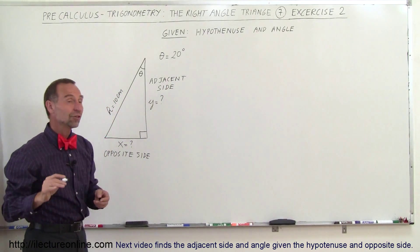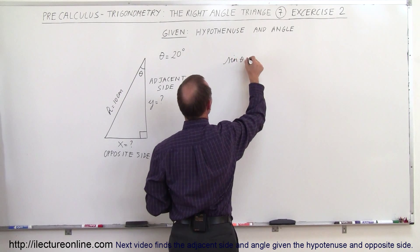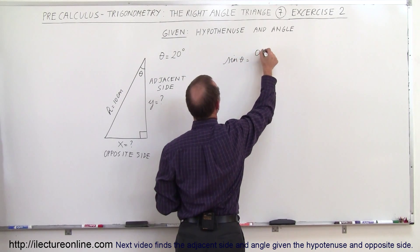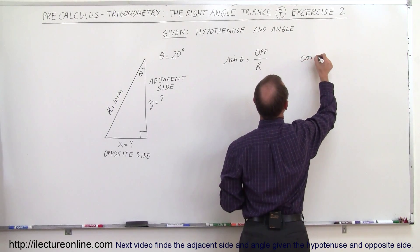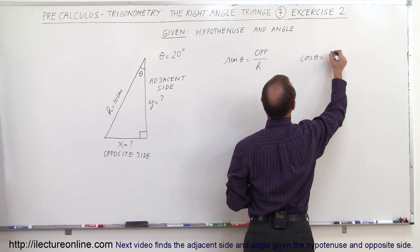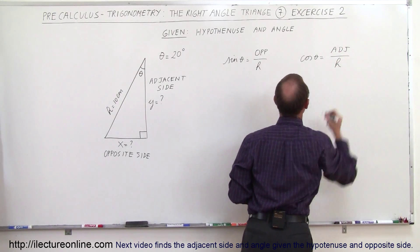And you realize that the definition of the sine of the angle, the sine of theta, is defined as the ratio of the opposite side divided by the hypotenuse and the cosine of theta is equal to the ratio of the adjacent side divided by the hypotenuse.